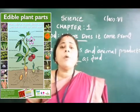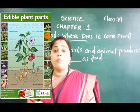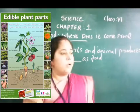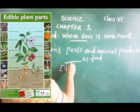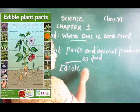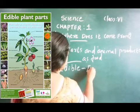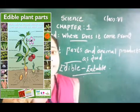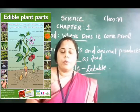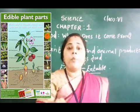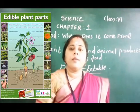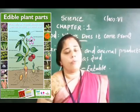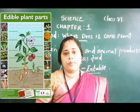Some plants have more than one edible part. What do you mean by edible? Edible means eatable. For example, can you think about the banana tree? The different parts of the plant we use as food items — that is what edible means.